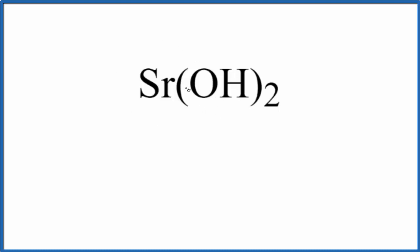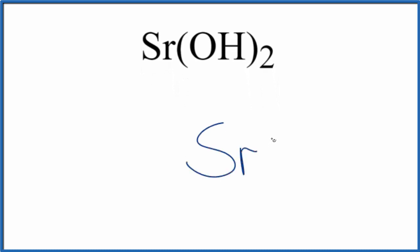So for the strontium let's just write Sr in the center, and then strontium on the periodic table it's in group two, so it has two valence electrons. Let's put them out here on either side.